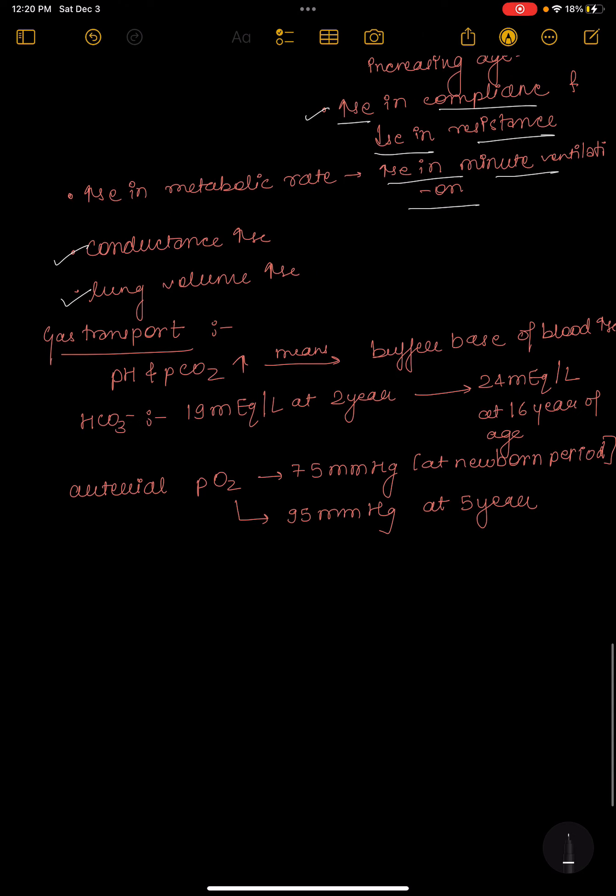Gas transport: increased pH and PCO2 means there is increased buffer base of blood. Bicarbonate at two years is 19 milliequivalent per liter and at 16 years it is 24 milliequivalent per liter. Arterial oxygen is 75 mmHg at newborn period and 95 mmHg at 5 years.